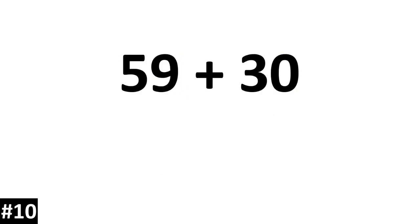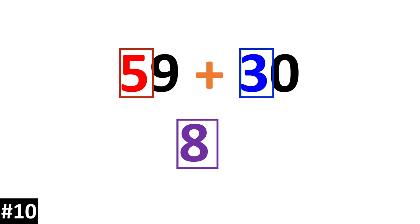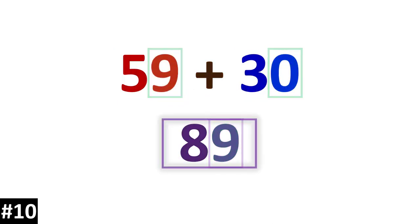59 plus 30. 5 tens plus 3 tens is 8 tens. Then we add the ones: 9. The answer is 89.